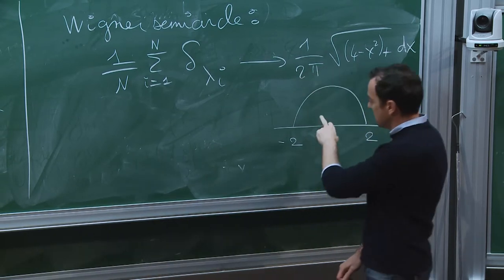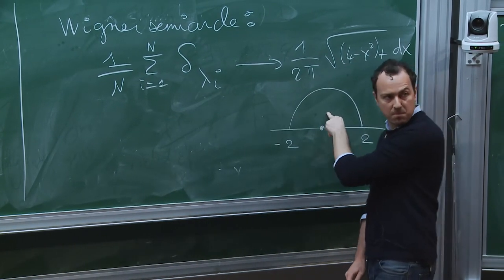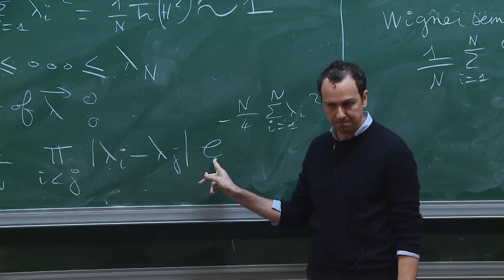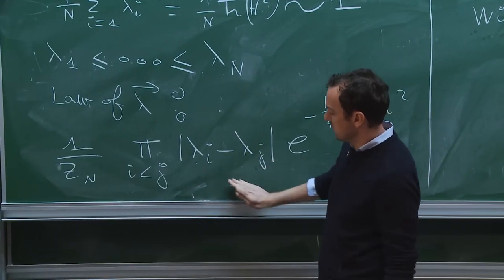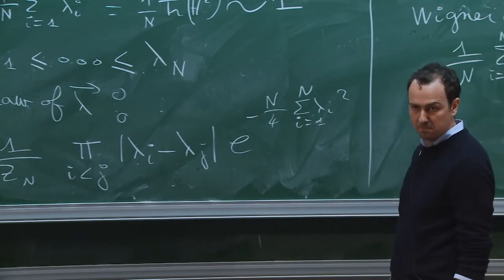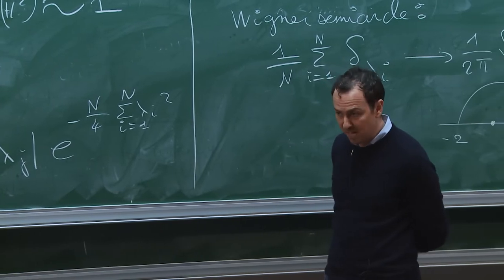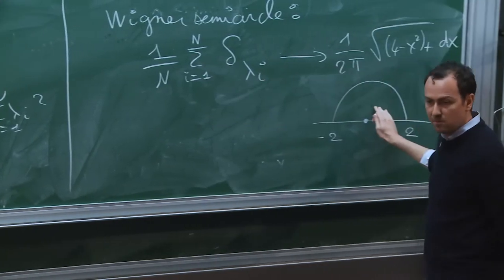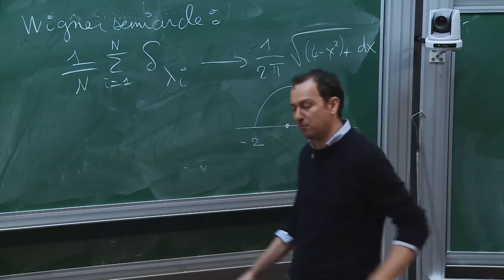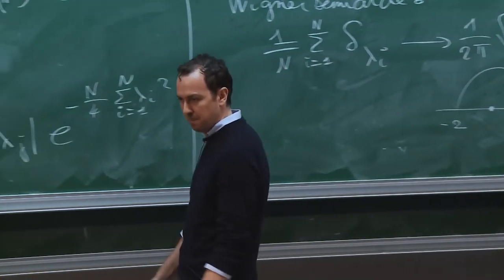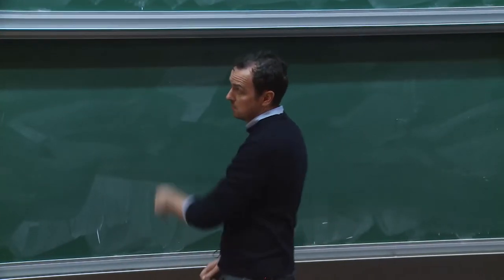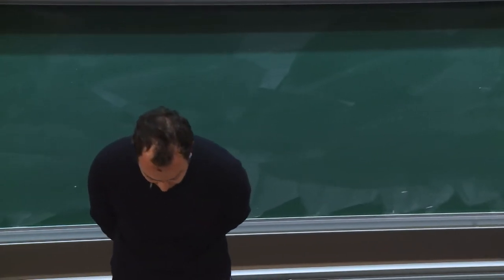If you want to understand from a different point of view why this is true, you may forget about the matrix and just look at this measure. If you write it in a Hamiltonian form e^{-H}, you will find out that the minimizer of H is exactly, in the large n limit, the semicircle law, by some kind of Riemann sum approximation. So this is one thing to know about this Gaussian ensemble.